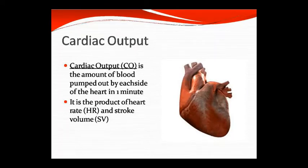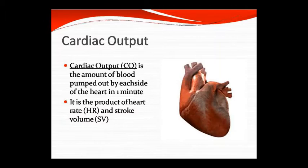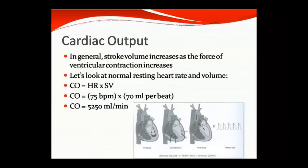Cardiac output is the amount of blood pumped out by each side of the heart in one minute. The product of heart rate (HR) and stroke volume (SV) is called cardiac output. So heart rate multiplied by stroke volume equals cardiac output.